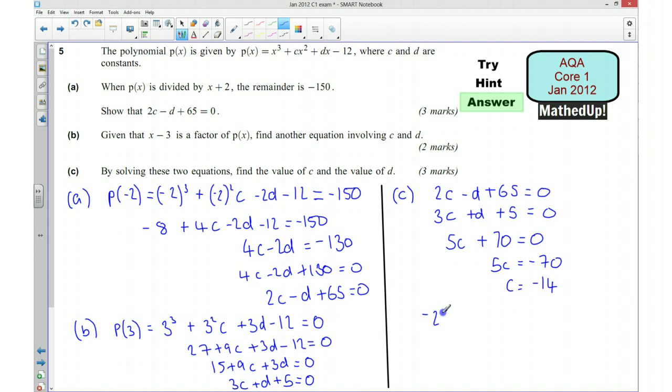So that's going to be 2 times negative 14, which is negative 28, minus d plus 65 equals 0. And I'm going to add d to both sides and I'm going to simplify this here, so that's going to be d is equal to 37. So I've got c is equal to negative 14 and d is equal to 37.